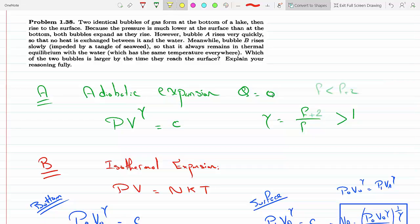Since bubble A has Q equals zero, there's no heat exchange between it and the water, this is the adiabatic expansion and it follows the rule PV to the gamma equals C, where gamma equals F plus two over F, where F stands for the degrees of freedom of the molecules. Clearly F is an integer and positive, so F plus two over F has to be greater than one, which will become important when I do the comparison.